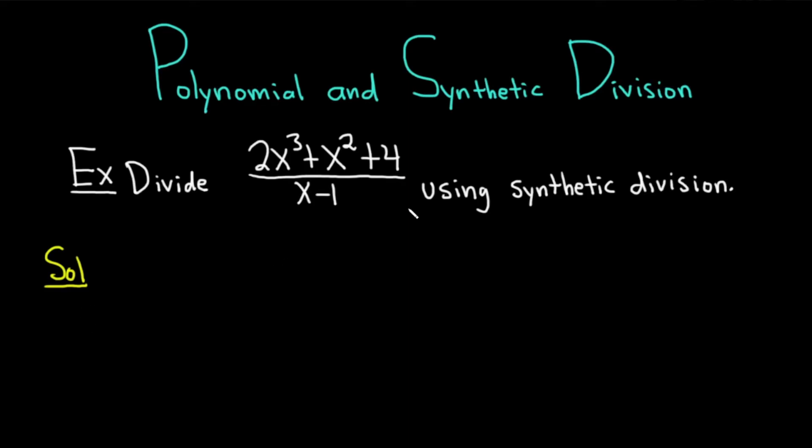Synthetic division only works when you're dividing by something like x - c or x + c. In this particular case, we're dividing by x - 1, so all is okay. The first step in synthetic division is to take this number down here, this -1, and change the sign.